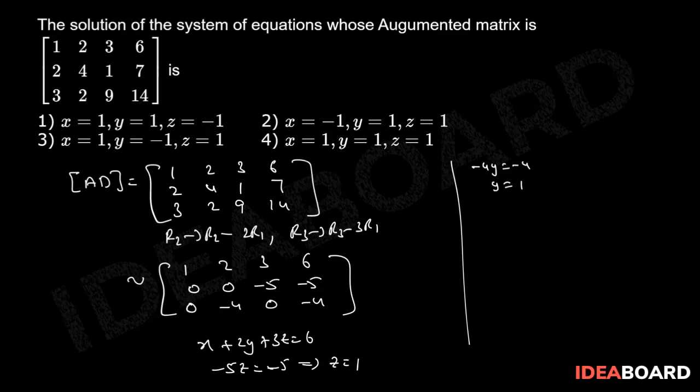Now substituting Y, Z in the above equation we have X plus 2 into 1 plus 3 into 1 equals to 6, implies X equals to 1. Therefore X equals to 1, Y equals to 1, Z equals to 1 is required solution. Therefore option 4 is correct option.